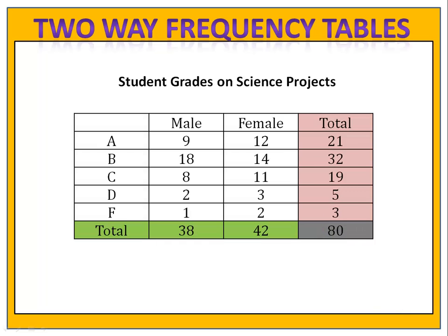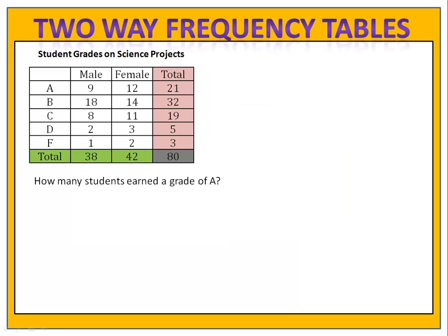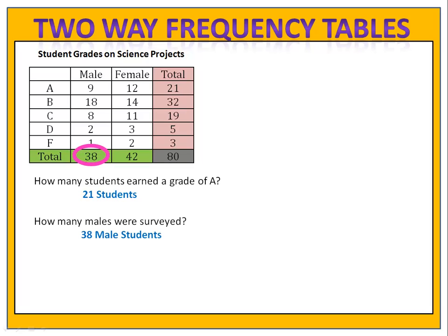When you typically get a table like this filled out, usually nothing's in color, but you can easily use highlighters to color anything you'd like. The first question is: how many students had a grade of A? We look at the table — twenty-one people in total got an A. How many males were surveyed altogether? A total of thirty-eight males were surveyed.